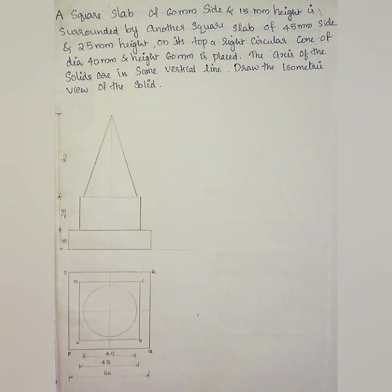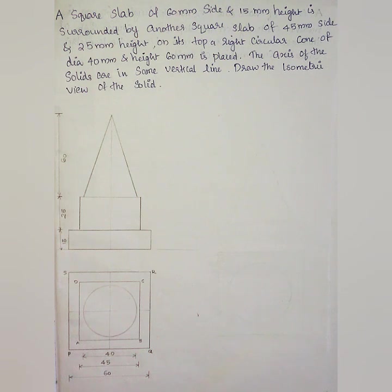A square slab of 60mm side and 15mm height is surrounded by another square slab of 45mm side and 25mm height on its top. A right circular cone of diameter 40mm and height 60mm is placed on top. The axis of the solids are in the same vertical line. Draw the isometric view of the combination.